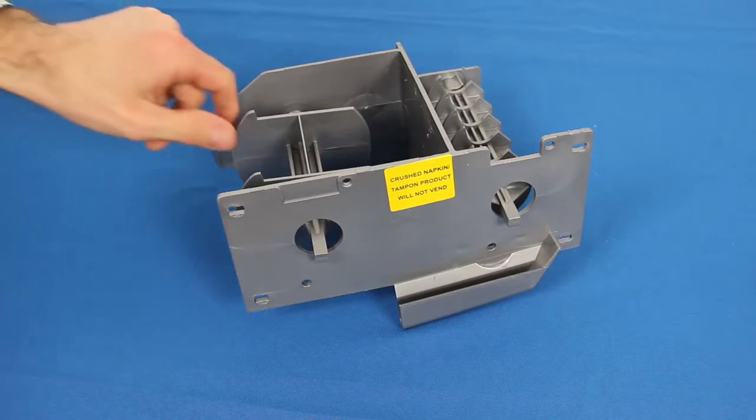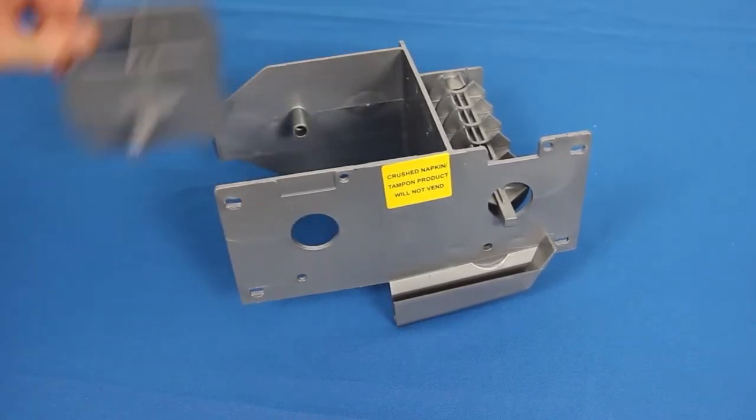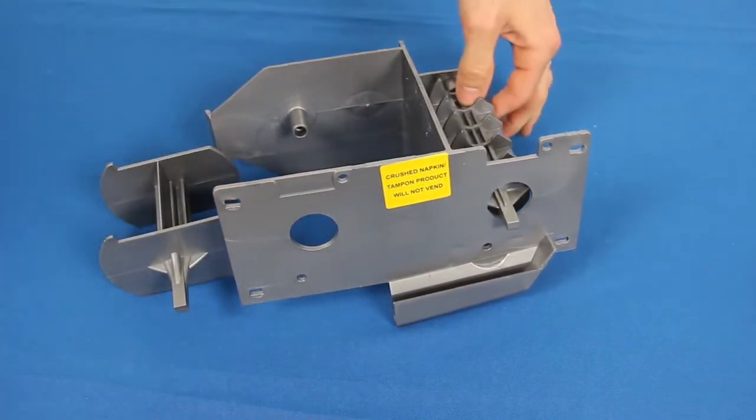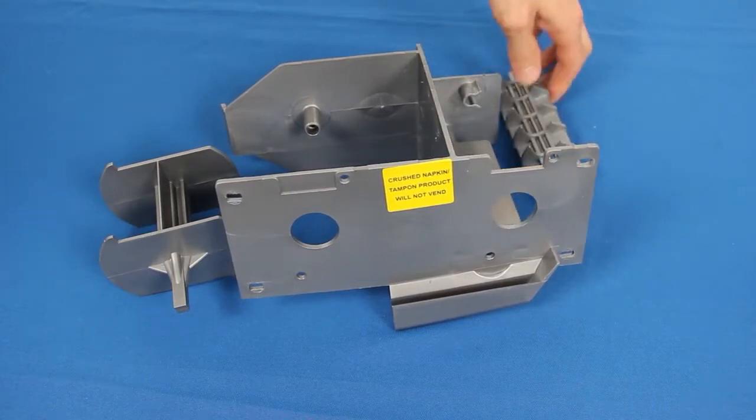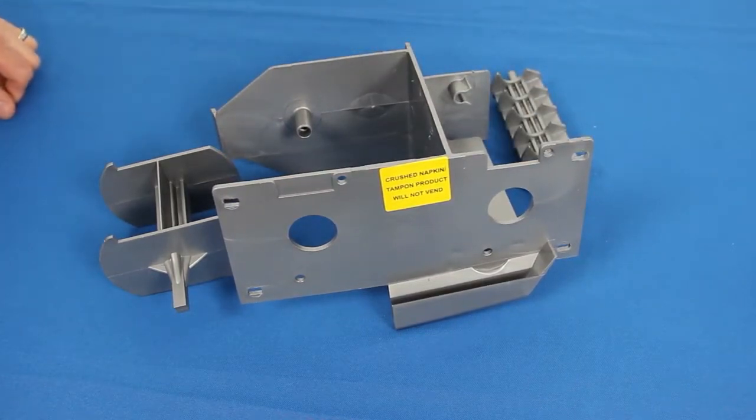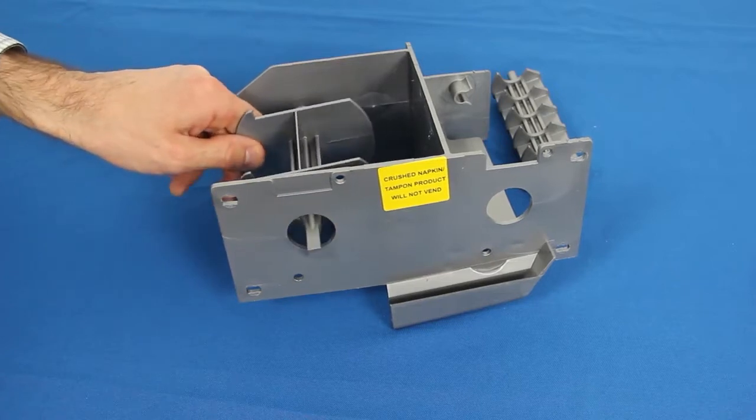It's possible that during removal, the vending cranks may fall out of place. Simply slide the pegs back in and make sure that the square peg faces forward and the teeth are up and to the left.